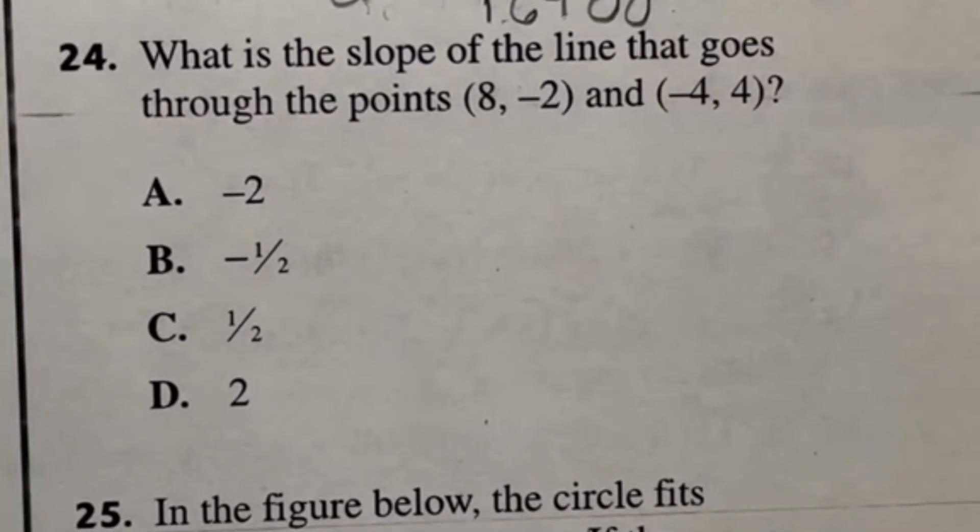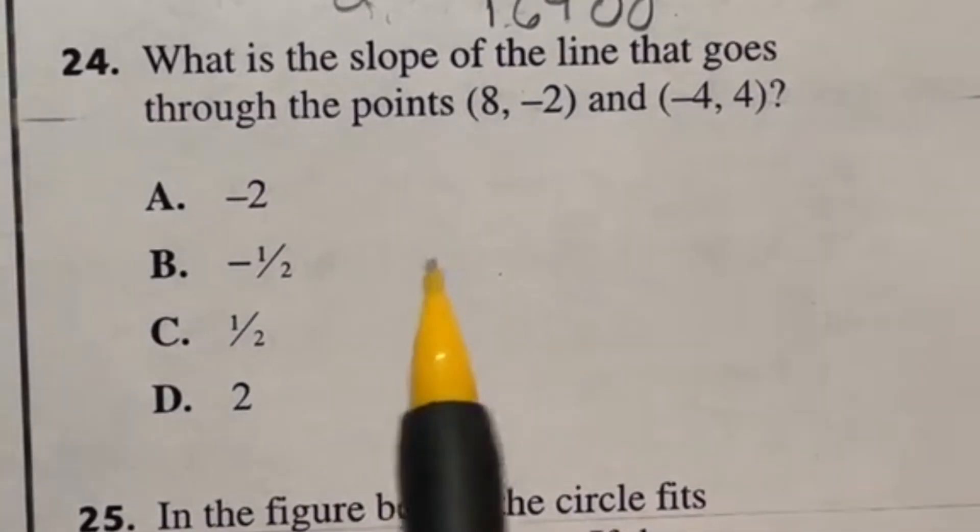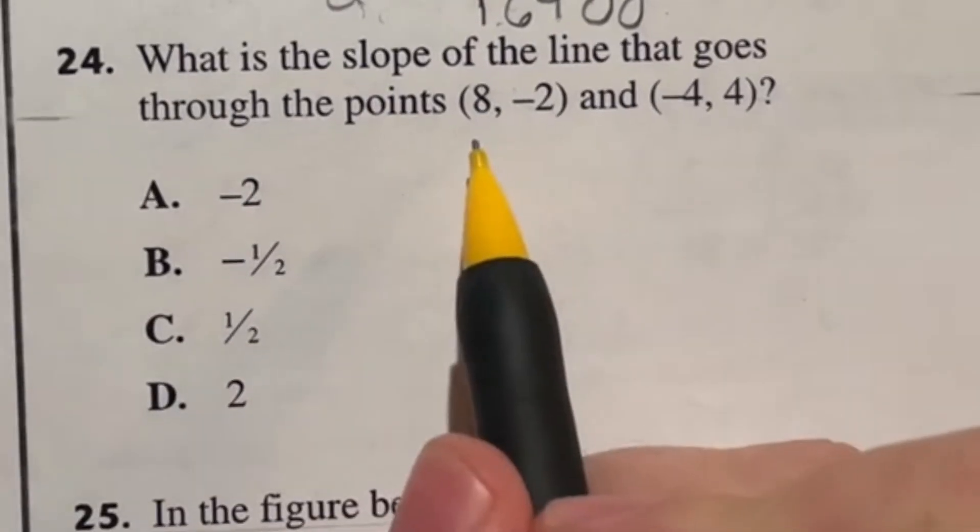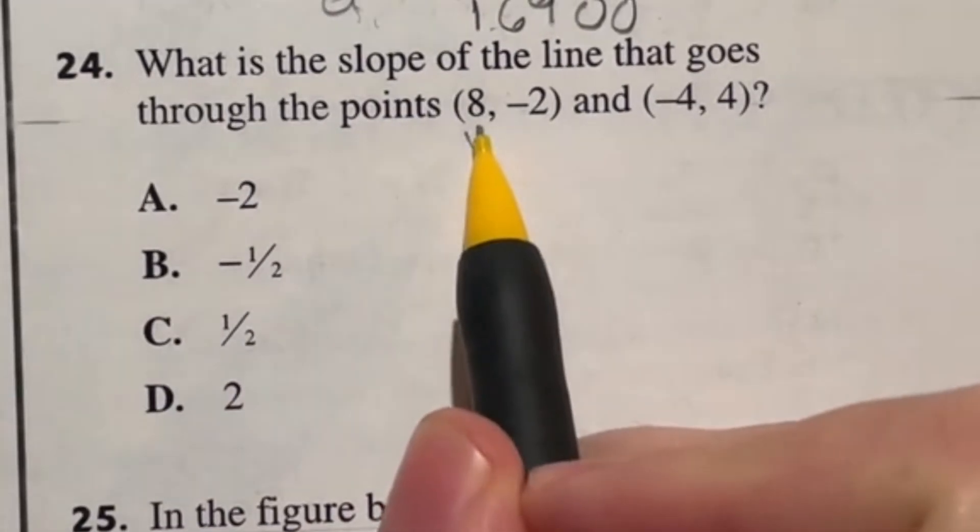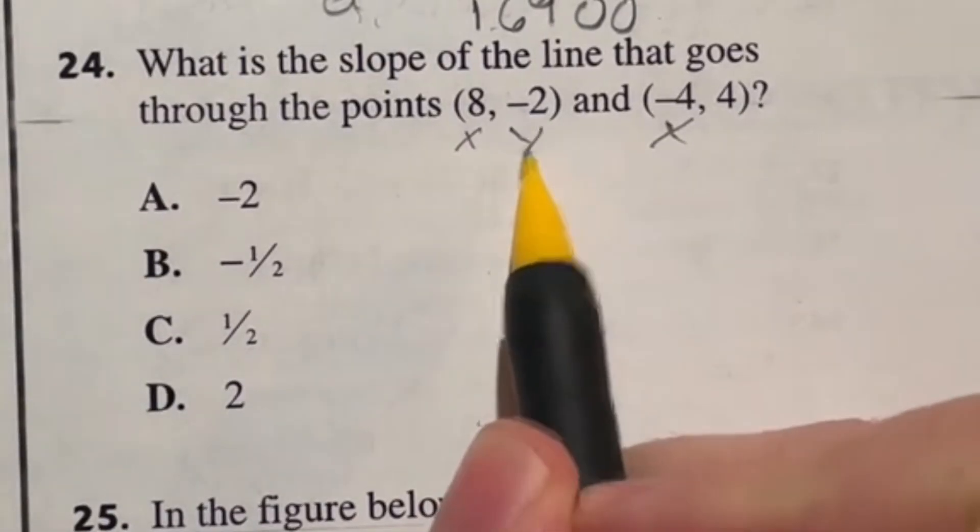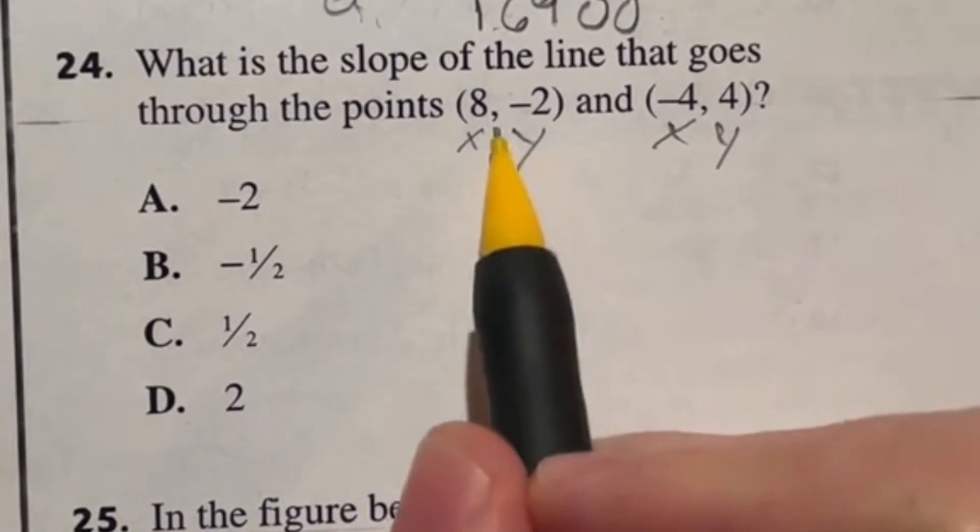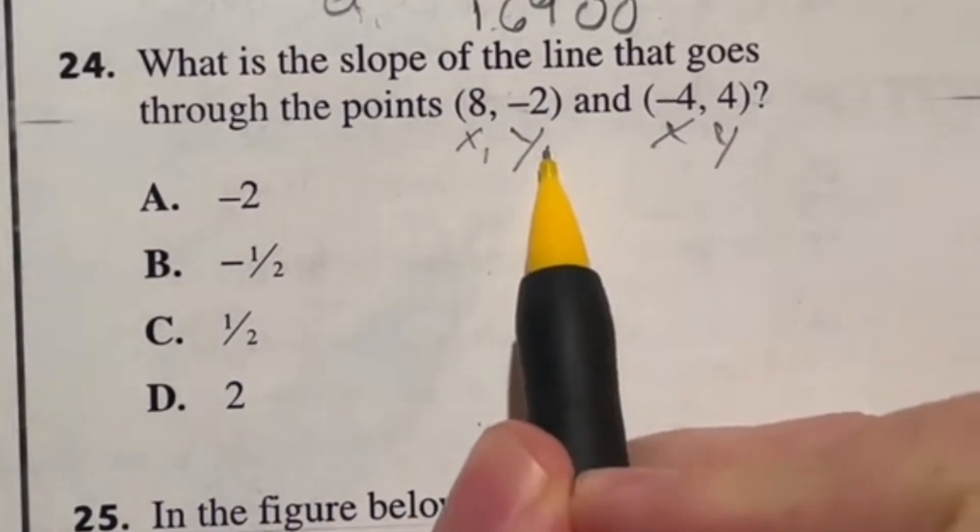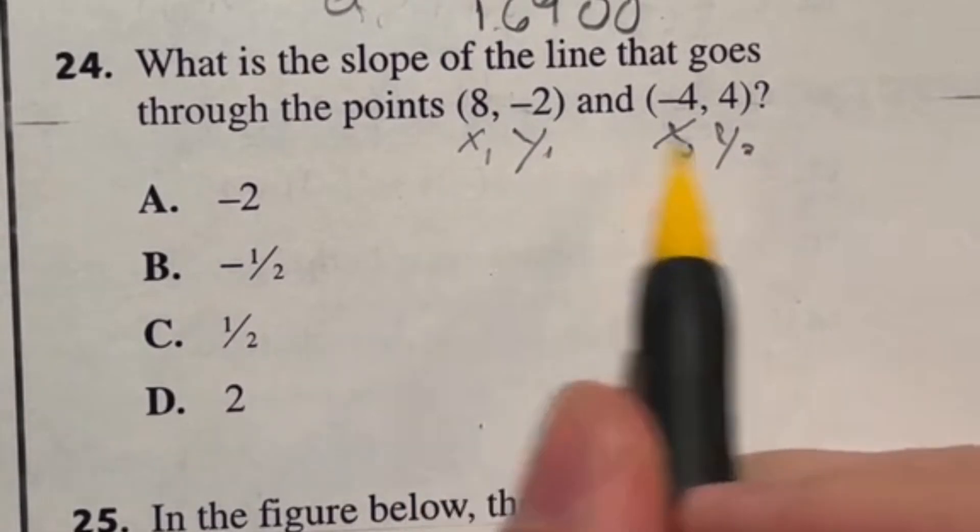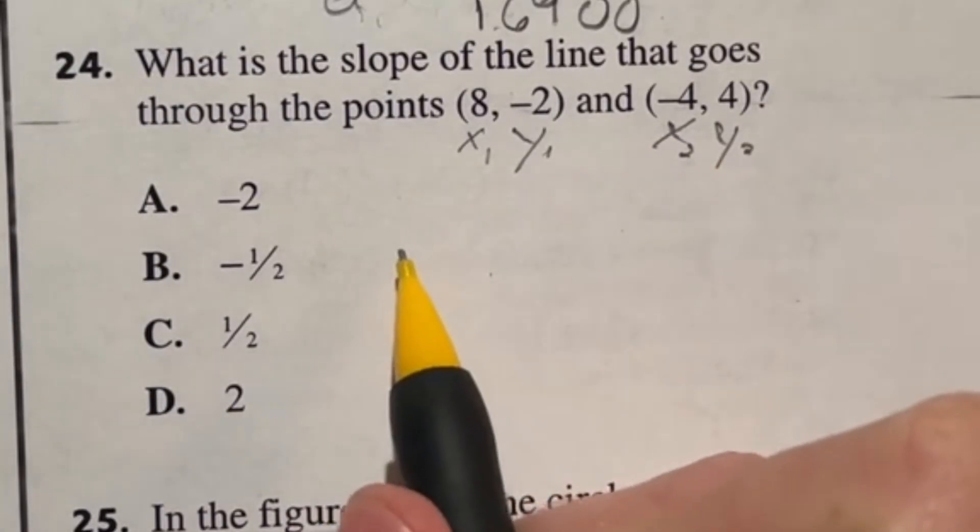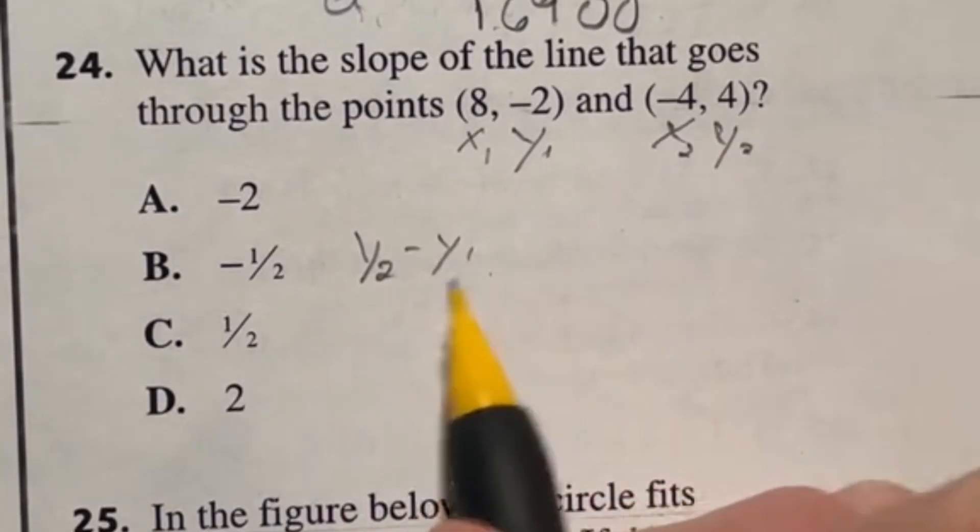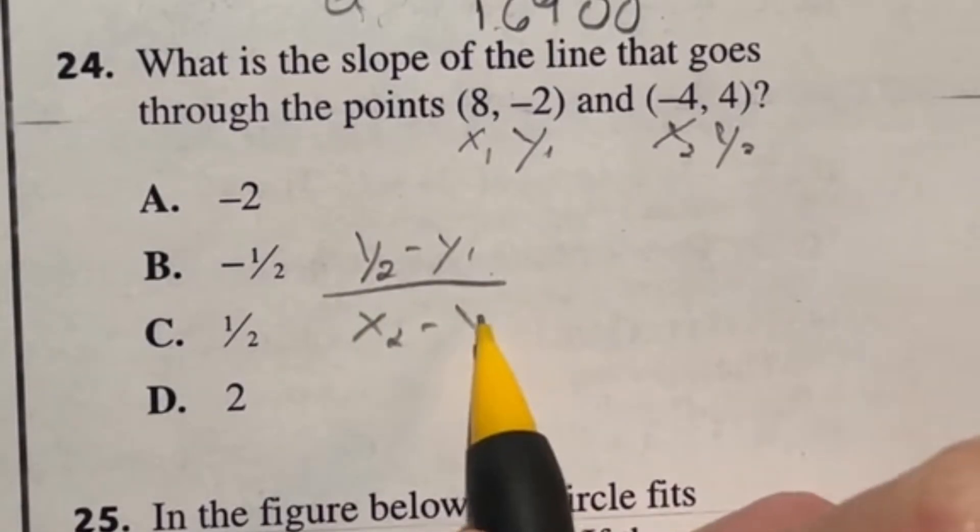24 is very much just a mathematical type question. It wants to know the slope of the line that goes through these two points. So your best way of dealing with this is identifying that the first number in each one of these is referred to as your x. The second number in each of these ordered pairs is referred to as your y. Because this is the first one, we're just going to label them both one. And this is the second point. So we'll label these both two. Now the way that this works is there's a slope formula that says y2 minus y1 over x2 minus x1 will give you the slope of the line that goes through these two points.